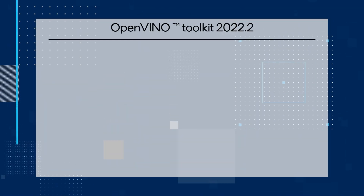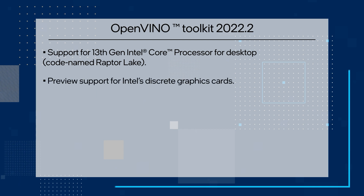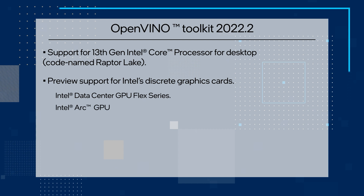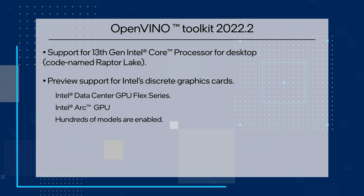Next, we're happy to announce the newest release of OpenVINO Toolkit 2022.2 is now available. This release supports broader model and hardware with support for Intel 13th Gen Core processor for desktop, codenamed Raptor Lake, preview support for Intel's discrete graphics cards, Intel Data Center GPU Flex series, and Intel Arc GPU for DL-inferencing workloads in intelligent cloud, edge, and media analytics workloads, and has hundreds of models enabled.